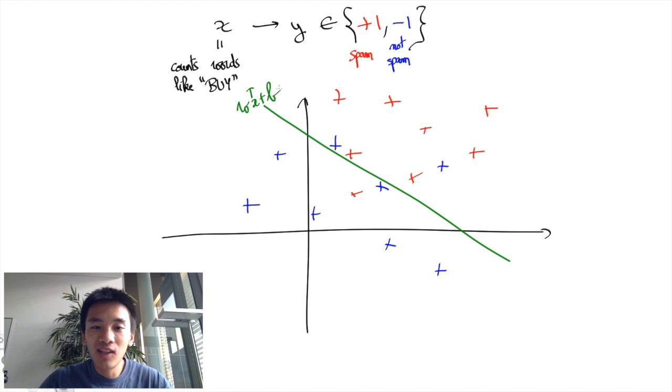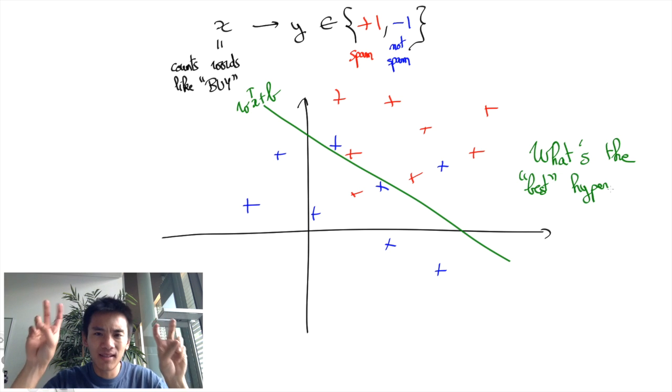This is known as a linear classifier. However, there may be no such hyperplane or there may be an infinite number of such hyperplanes. How can we determine the best?